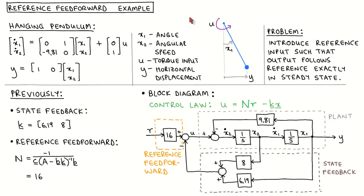The plant for this example is the same one we have used in previous videos, that of a pendulum linearized at the hanging position. The setup is shown here. The frictionless pendulum has a length of one meter and a tip mass of one kilogram.